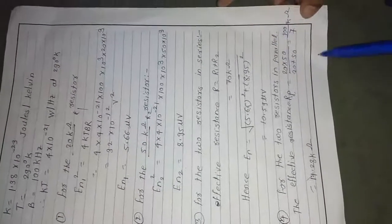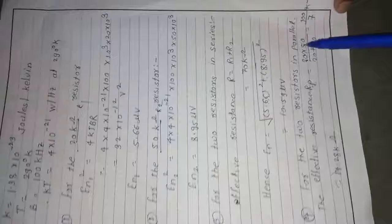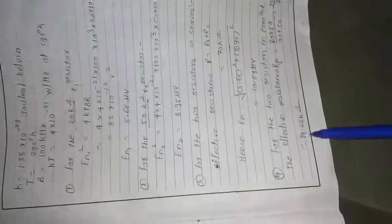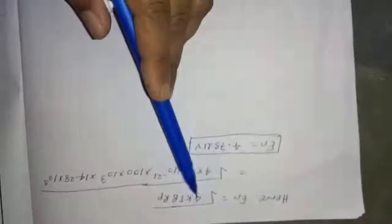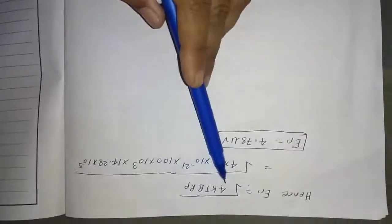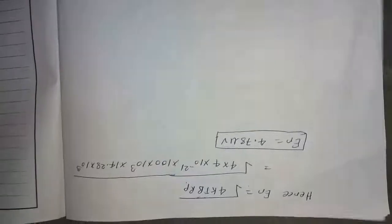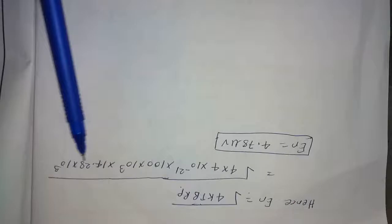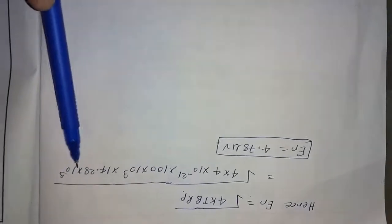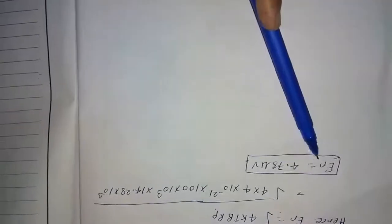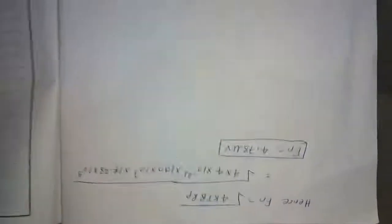For two resistors in parallel, Rp = 1/(1/R1 + 1/R2) = 1/(1/20 + 1/50) = 14.28 kΩ. Substituting into EN² = 4·Rp·K·T·B, where Rp = 14.28 kΩ = 14.28 × 10³ Ω, we get the equivalent noise voltage for the parallel combination.